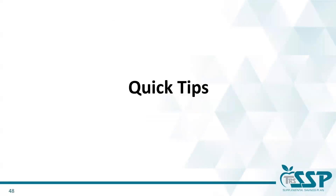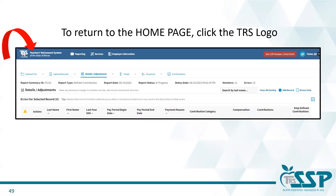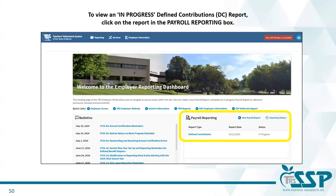Now it's time for some quick tips. If you click the TRS logo anywhere within the Gemini employer portal, you will be taken back to the homepage — the landing page where you'll find a picture of the TRS building in the background. An easy way to view an in-progress defined contribution report is to click on the report in the payroll reporting box, which is circled in yellow on the slide.